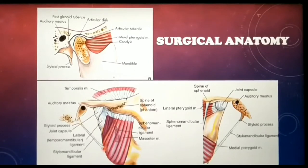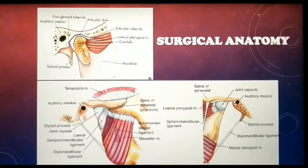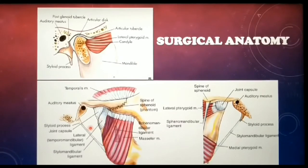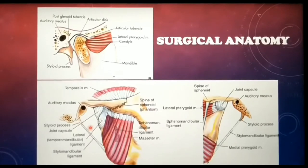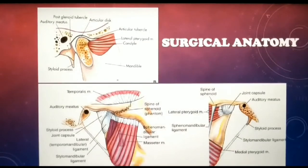These four structures have attachments to and around the TMJ, and their main function is to control excessive movement or to guide the direction of the condylar head and articular disc during movement or functioning of the TMJ.